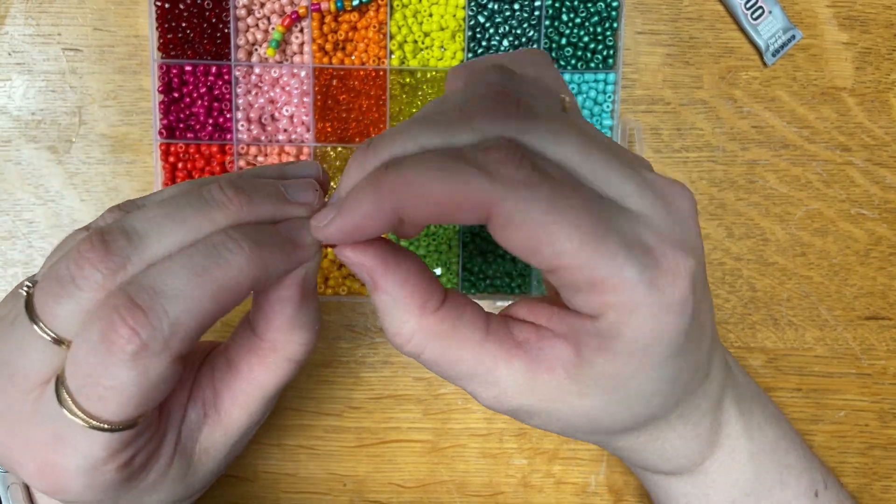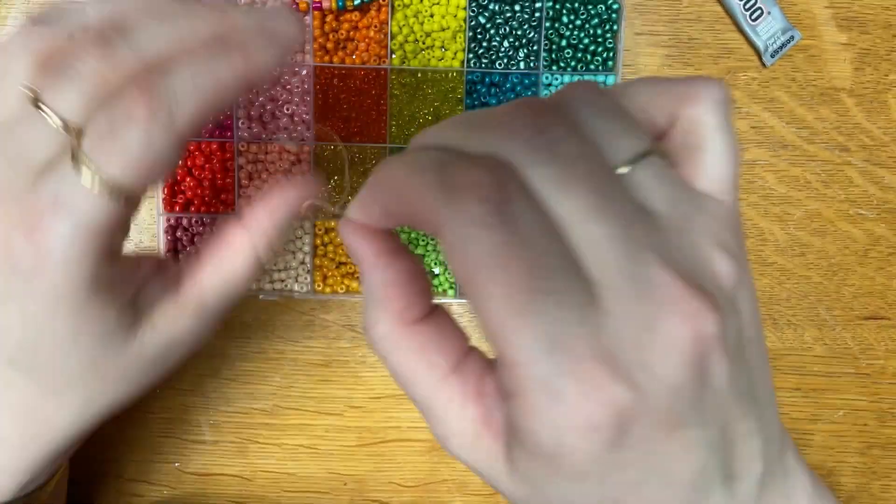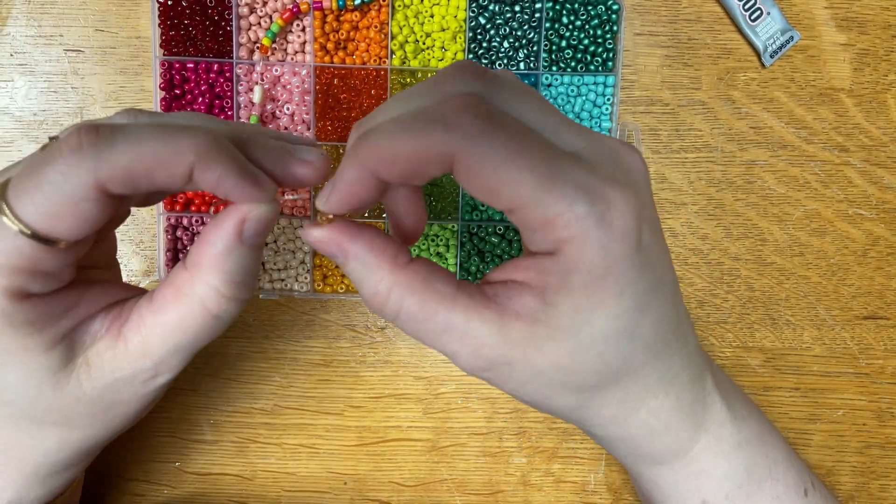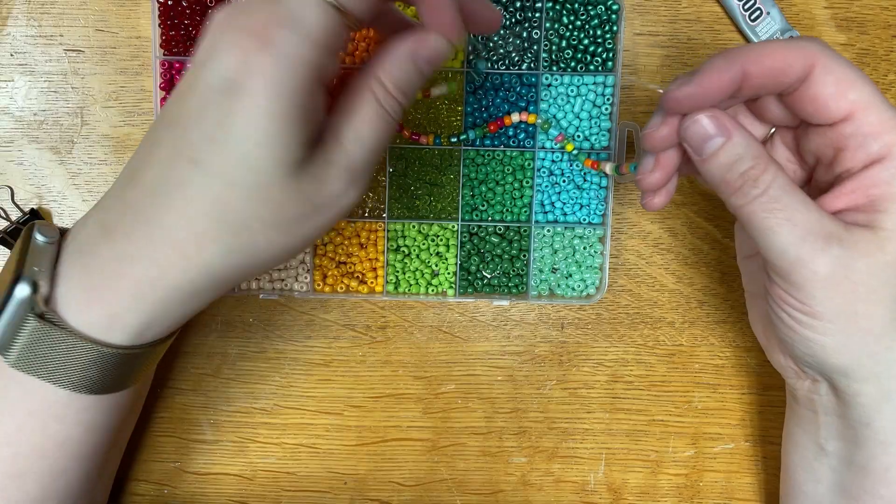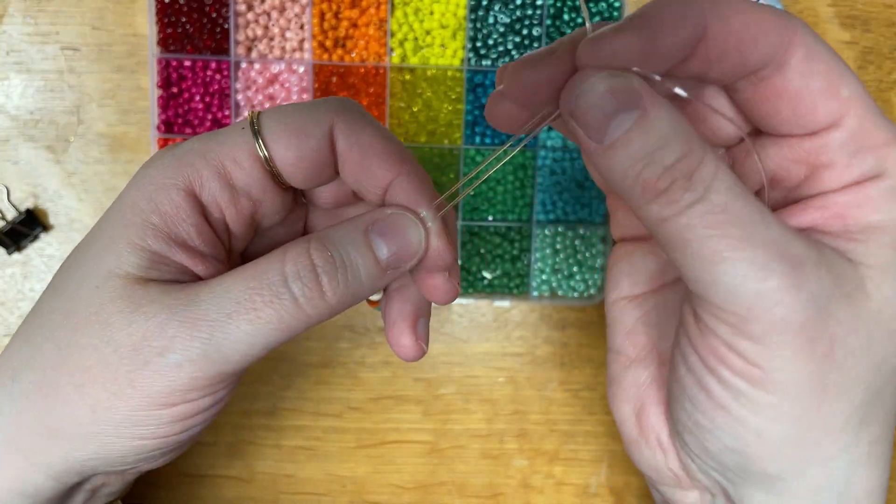But if you tie the knot at the end and use super glue or E6000 directly on the knot, it will not fall apart on you. It will stay in one piece for however long you want it. So you can make works of art for your friends and for yourself and never have to worry about them breaking.